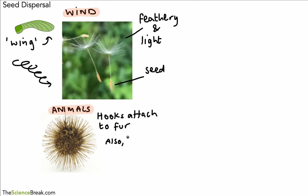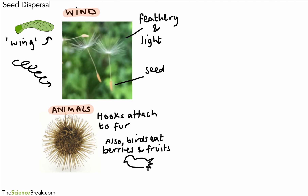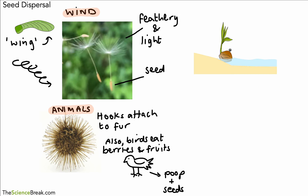One other way animals can be used is when birds eat berries or fruits. The seeds inside these are usually non-digestible — they cannot be digested. So a little while later, when the seed passes through the digestive system and the bird produces feces (the science word for poop), the seed is inside the feces, which spreads the seed further away from the parent plant.